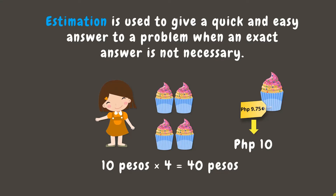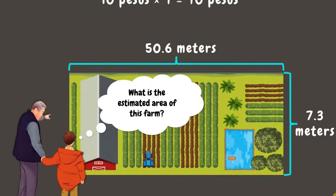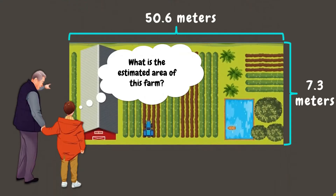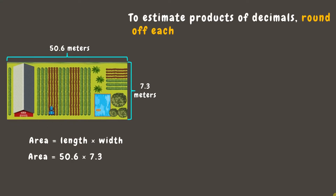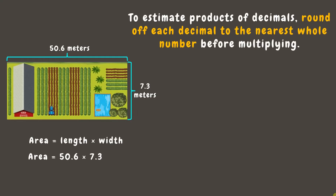Now that you understand the concept of estimation, let's go back and help the boy estimate the farm's area. The area is found by multiplying the length by the width, which gives us 50.6 times 7.3. To estimate, round each decimal to the nearest whole number before multiplying.